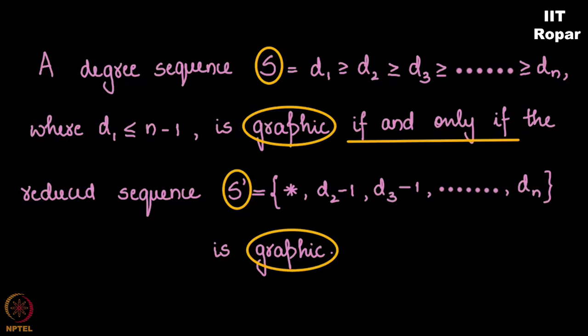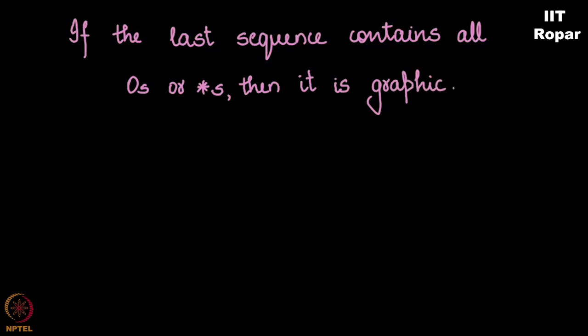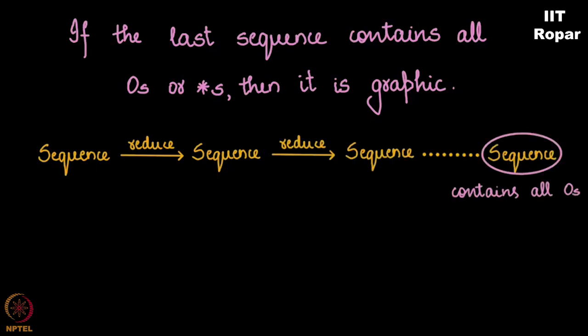Now the most important part is the following: if the last sequence contains all zeros, then it is graphic. This is very important. Why? You need not even draw the graph at each step like we did earlier. You have a sequence, you reduce it, reduce it again, go to the next sequence and so on. Once you finish the process, if the last sequence contains all zeros, then the given sequence is said to be graphic.